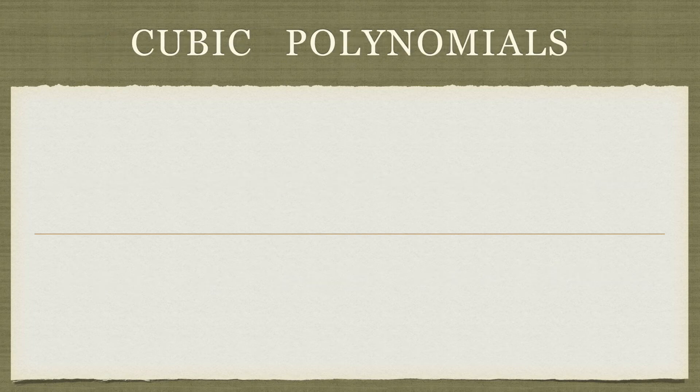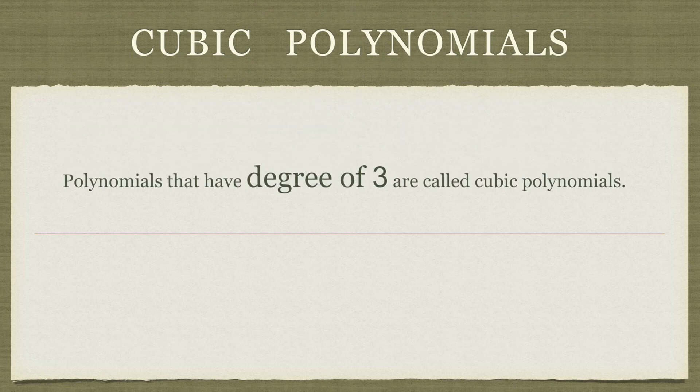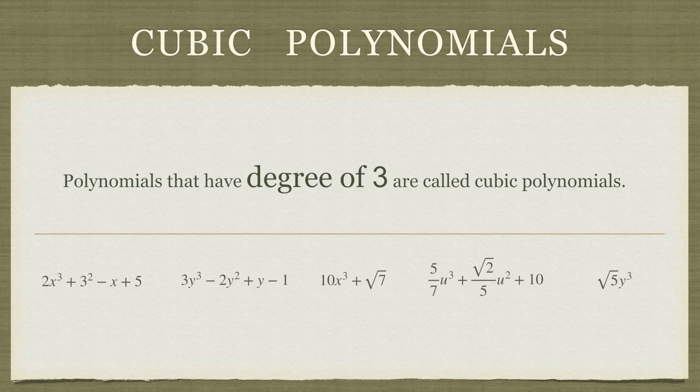Let's take a look at what are cubic polynomials. As you could have guessed, polynomials that have a degree of 3 are called cubic polynomials and here are some examples. So in each of these examples we note that the variable is raised to the highest power of 3.